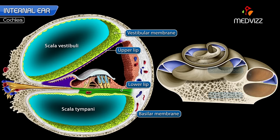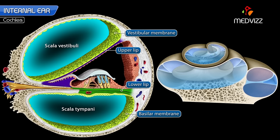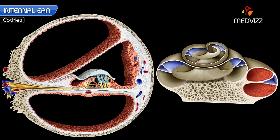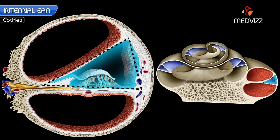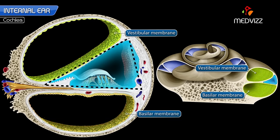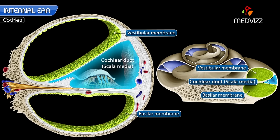The scala vestibuli and scala tympani communicate with each other at the apex of the cochlea by a small opening called the helicotrema. The triangular area enclosed by the vestibular and basilar membranes and the outer wall of the cochlear canal forms the cochlear duct or scala media.